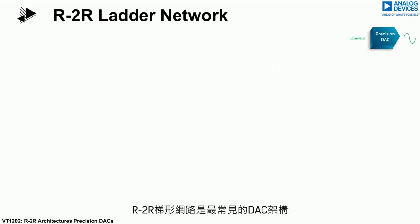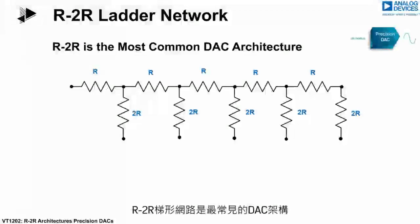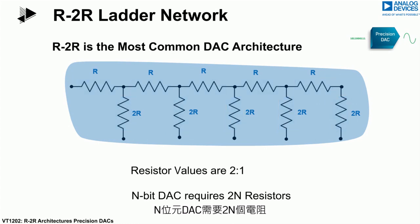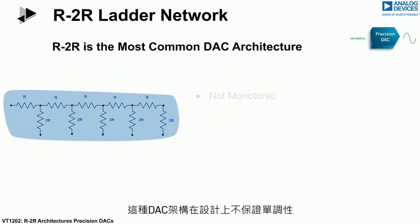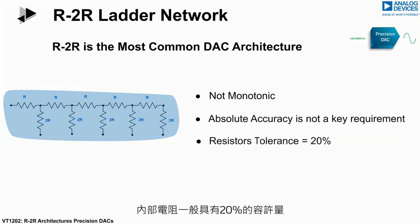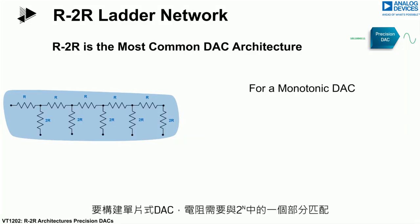The most common DAC architecture is the R2R ladder. This uses resistors of only two different values where the ratio of these is two to one. An N-bit DAC requires 2N resistors. This DAC architecture is not monotonic by design, and absolute accuracy is not a key requirement; the internal resistors can typically have a 20% tolerance.